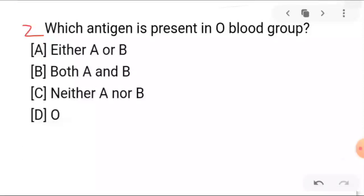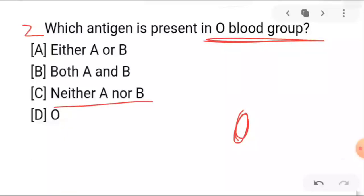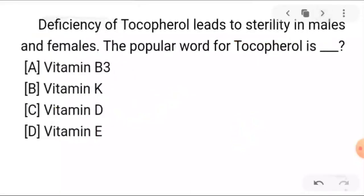So you can see that in O blood group, the antigen present will be zero — neither A nor B. Here you will see that antigen is not present. But antibodies are both present, and antigen is absent in both cases.